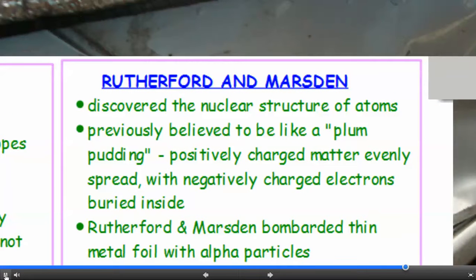Now two very important scientists who discovered the nuclear structure of atoms were Rutherford and Marsden. Now before their work, it was believed that atoms were like plum puddings, it was described as the plum pudding model, which basically meant that they thought there was a load of positively charged matter, which was evenly spread, with negatively charged electrons buried inside.